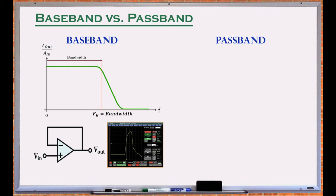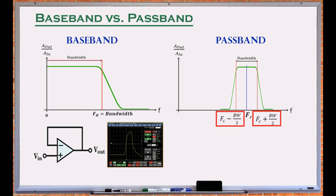For a passband system, bandwidth defines a frequency range around a midpoint called the center frequency. The two cutoff frequencies are the center frequency plus and minus one half of the bandwidth. Note that the bandwidth can be much smaller than the center frequency. Band pass filters are common devices with this type of frequency response.